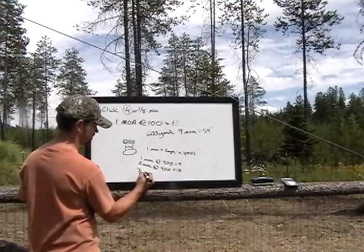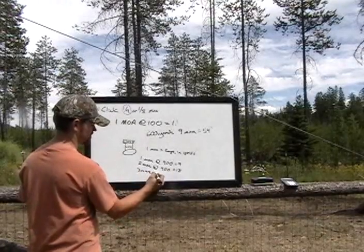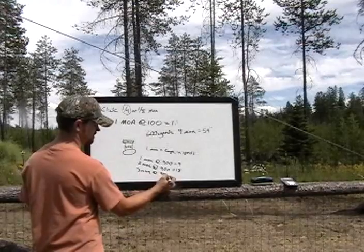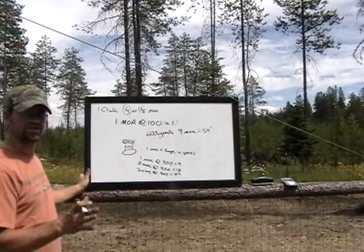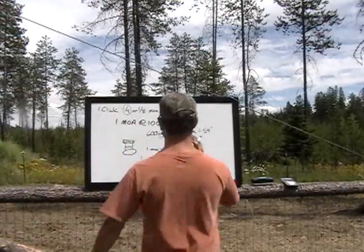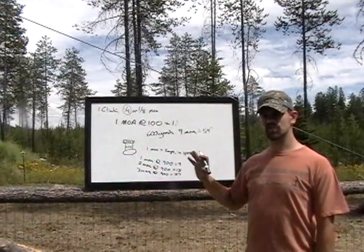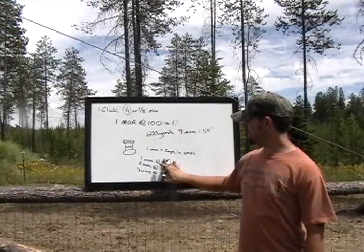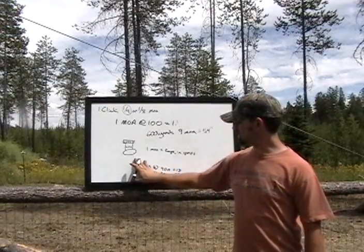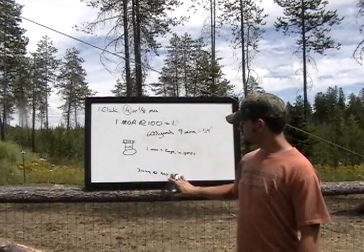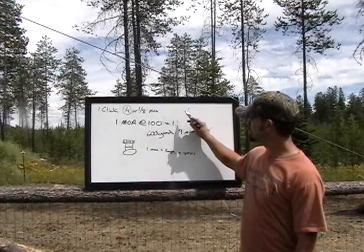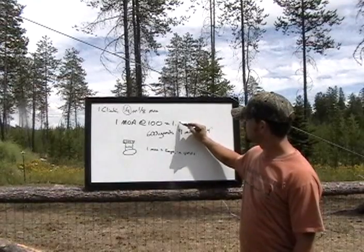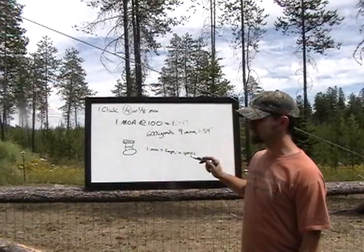3 minute of angle at 900 yards equals 27 inches. And this goes on and on. It's all the way across the board. It does not change. This will always stay the same, no matter what. And if you wanted to get absolutely precise and go 1.047, you can.